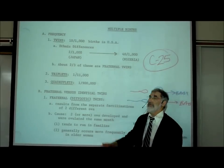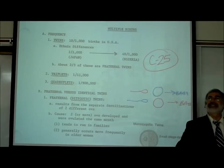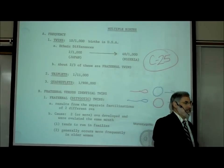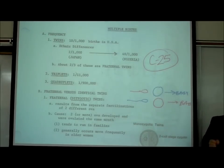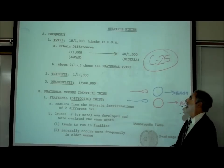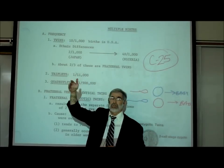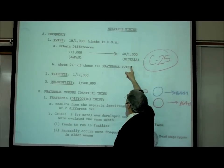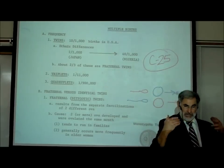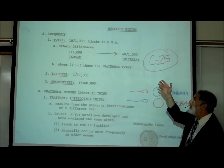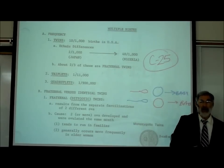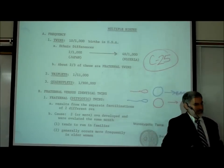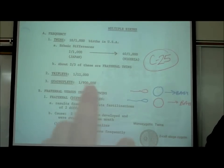There are ethnic differences in twin probability, primarily related to fraternal twins. The probability for individuals of Japanese ancestry is just two out of a thousand, whereas for Nigerian ancestry it's 40 out of a thousand — much higher. There are genetic differences that manifest ethnically. The tendency to ovulate more than one egg each month is genetic.